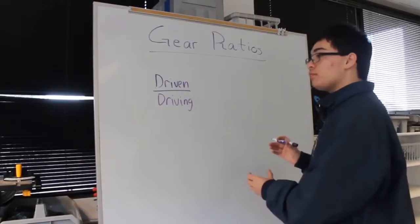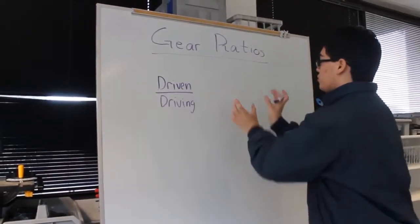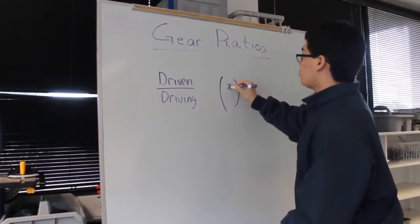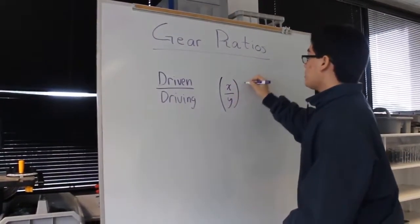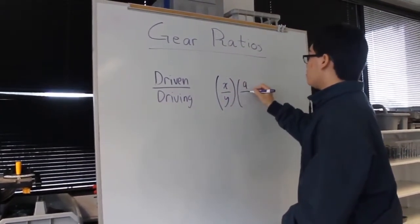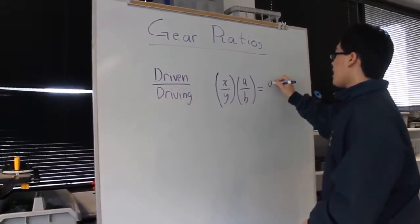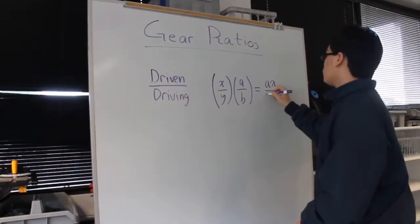For compound gear ratio, it's pretty much the same except you multiply the two gear ratios together. So if your first gear ratio is X over Y, and your second gear ratio is A over B, then your final gear ratio will be AX over BY.